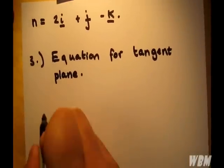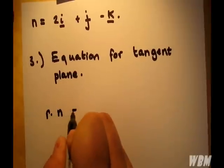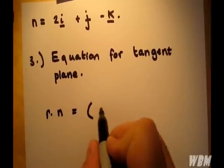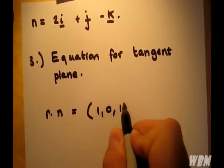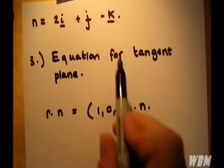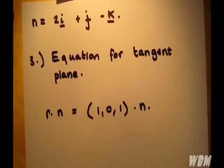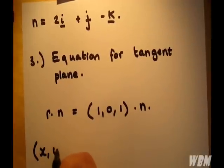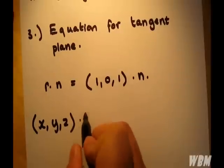And this is as simple as r dot n equal to the point we're given, multiplied by n. Where n is of course the normal at (1,0,1), and r here is simply equal to x, y, z. So let's write this out.